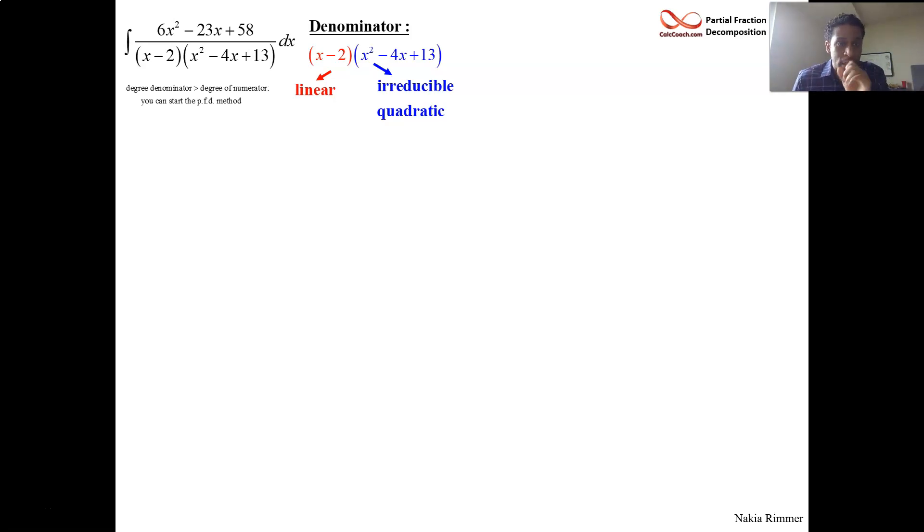Now, how do they decompose? Well, the linear is the easiest to decompose. It gets its own fraction with a constant in the numerator. It's when you have the irreducible quadratic that you have to have a linear numerator. It doesn't matter the order that you do. We can put the irreducible quadratic first. We would then use ax plus b. But since it's second here and a is already used, we use bx plus c. And so there's three constants, a, b, and c, we have to find.